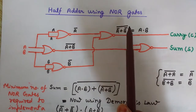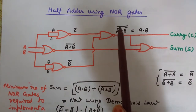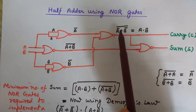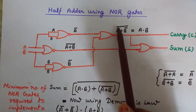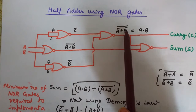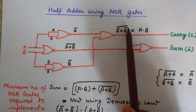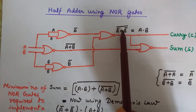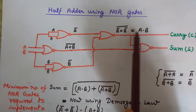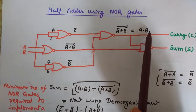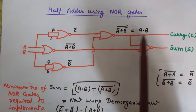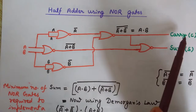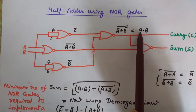The output of this NOR gate is (Ā+B̄)̄. Applying De Morgan's law — complement everything one by one: Ā̄ = A (double complement cancels), and B̄̄ = B, and the plus converts to dot (AND operation). So the result is A·B, which is the Carry output. We have now derived the Carry = A AND B using only NOR gates.